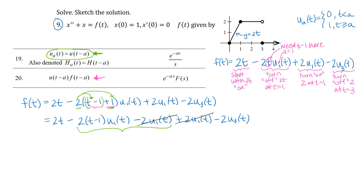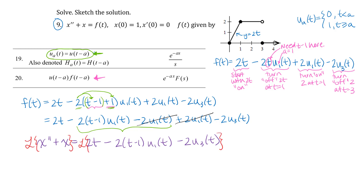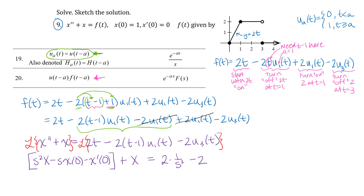Let's write down the whole differential equation with this function as the right-hand side, then apply the Laplace transform to both sides. Using linearity properties, I separate term by term and pull constants out front. On the right-hand side, the first term gives 2 times the Laplace transform of t, which is 1/s². For the next term, I have my minus 2 and I need to be careful — this is line 20 on our table of Laplace transforms.